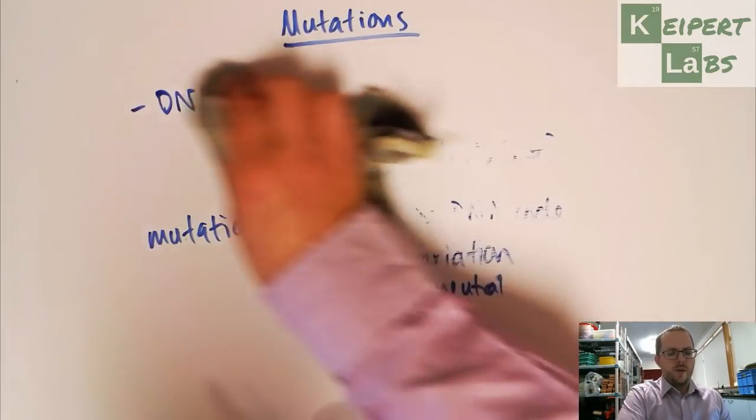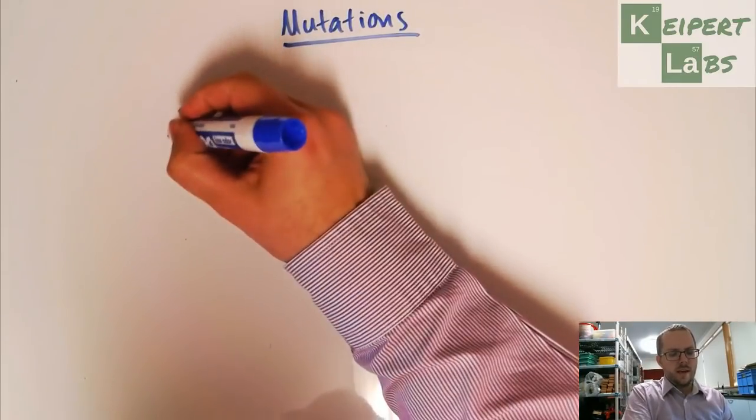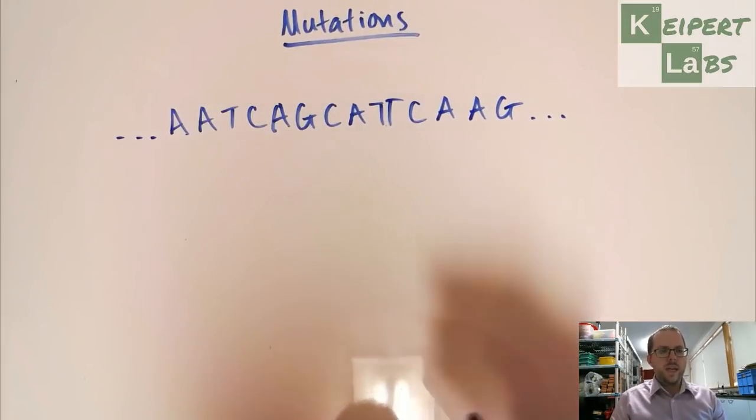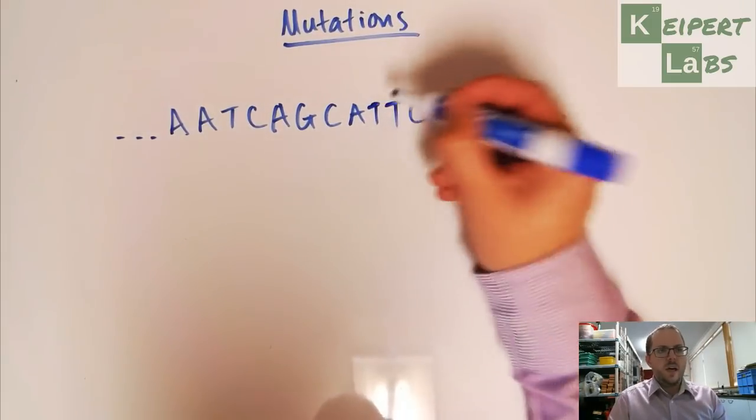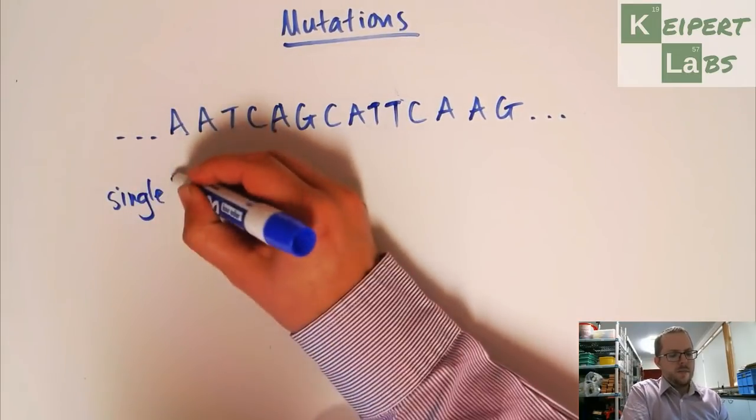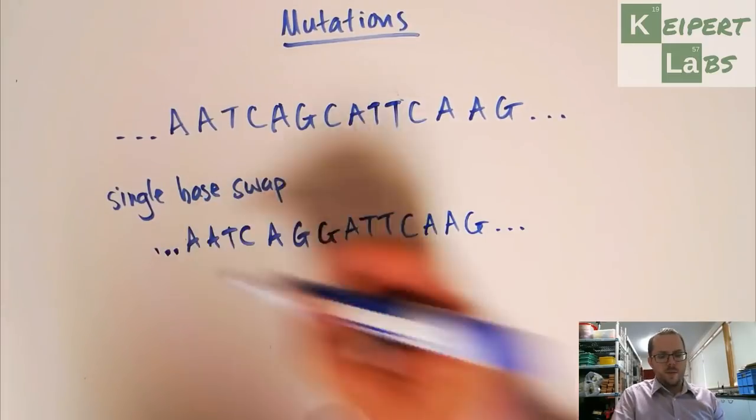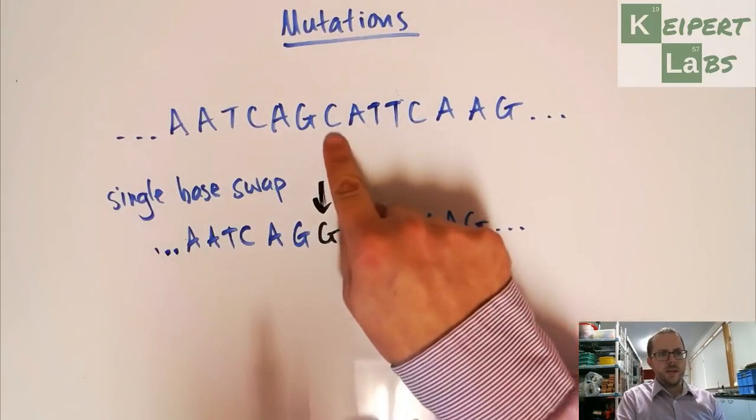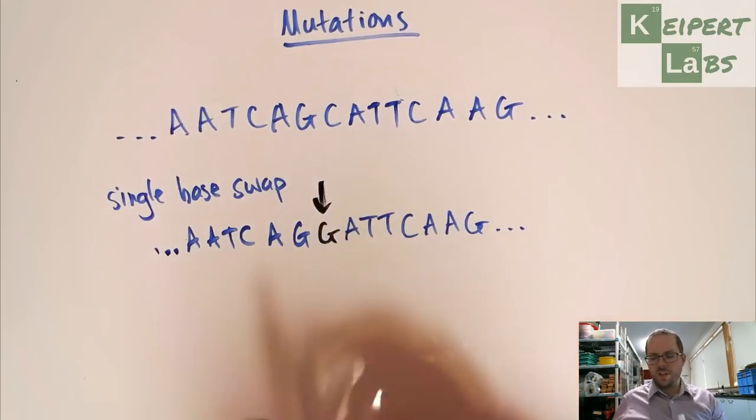So we're going to quickly now talk about in what way, what kinds of mutations are there. So let's say that this is the code in a particular portion of the DNA strand. So what we can have here, so what we can get is that we can get a single base swapping. So what we're talking about here is this idea that the one that I've shown in black is where this C up here has swapped for a G. So in that code, then we have a little bit of a glitch in the order there.